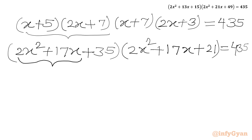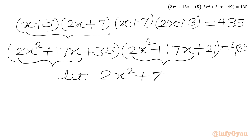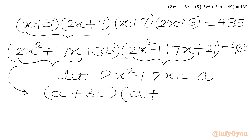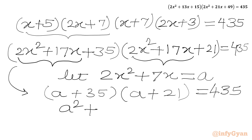Now 2x² plus 7x appears in both. So let us consider 2x² plus 7x equal to a. We will write our equation in variable a as: (a + 35)(a + 21) equal to 435.